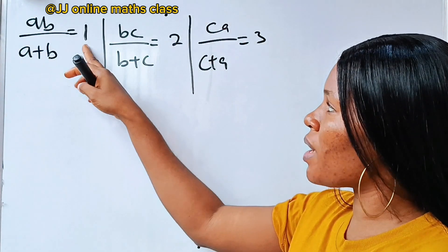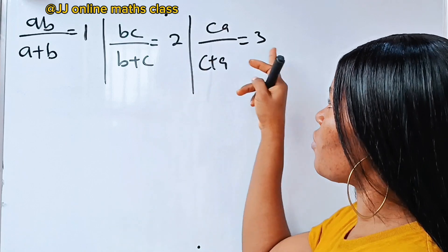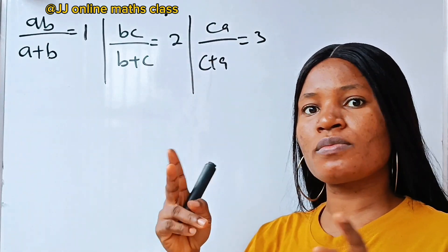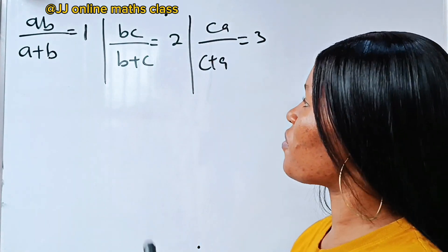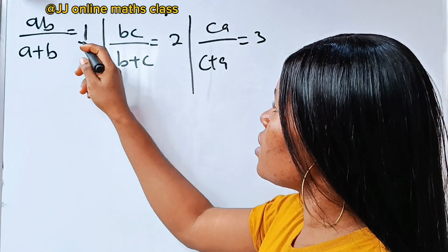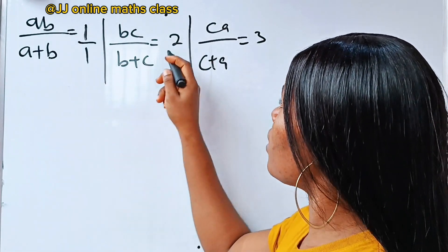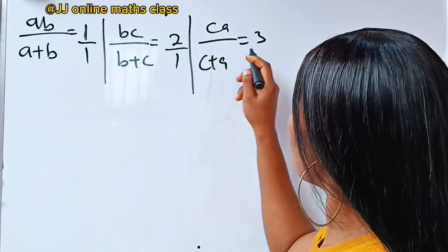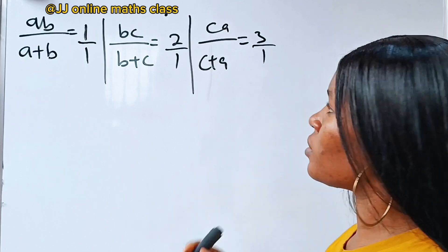First, let's make each of them a fraction. To make each of them a fraction, this should be over 1, this over 1, this over 1.